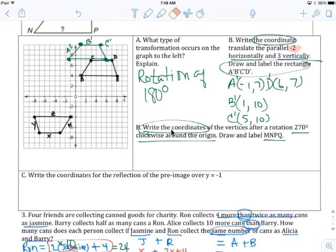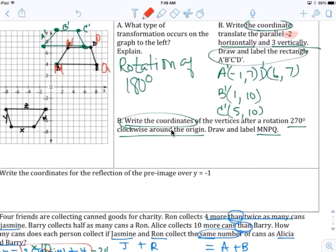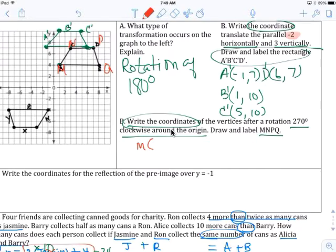Draw and label. It says draw and label. Write the coordinates of the vertices after a rotation of 270 clockwise around the origin. Label it M, N, P, Q. I'm going to now label it M, N, P, Q. So M, we flip that. 1, 4. 4, 1. N, we flip this N here from 3, 7 to 7, 3.